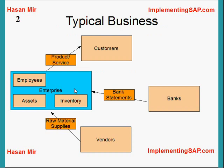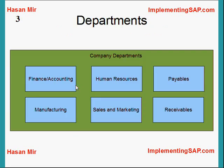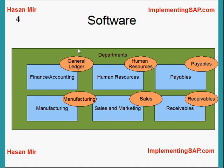How would a company manage all these entities? In order to do that, a company has departments, and each department has a fixed role dealing with a specific area of the business. For example, the finance department deals with reporting, and the HR department deals with managing employees. Other examples include the payable department dealing with vendors, the receivable department dealing with customers, the sales and marketing department, and the manufacturing department.